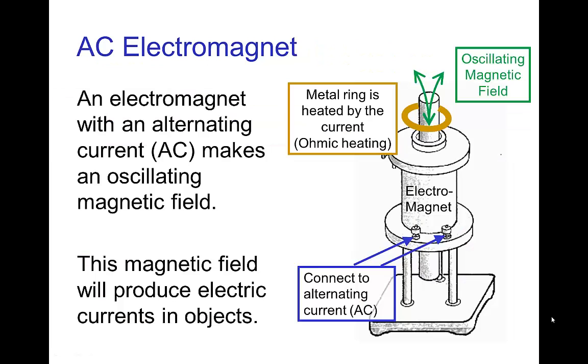Now instead of physically moving a magnet back and forth, I can use an alternating current electromagnet. Now when I have an electromagnet with alternating current, when the current is moving one way, the north pole is on one side, and then when the current moves the other way, the south pole is on that side. So basically I can create an oscillating magnetic field using an electromagnet that's driven by alternating current.